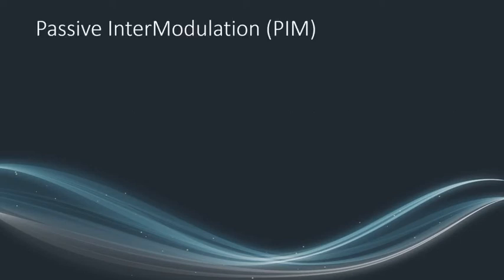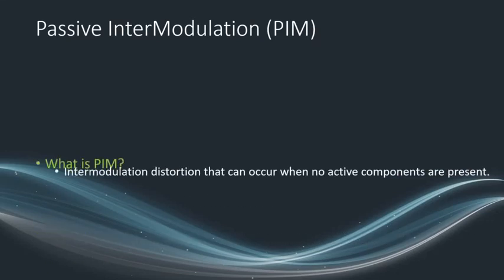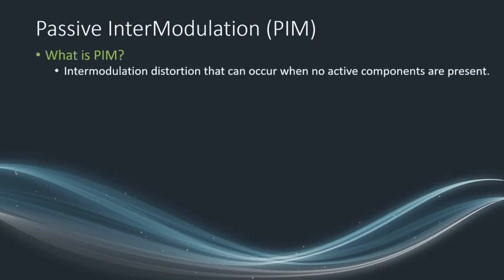Let's first talk about what is PIM. PIM is passive intermodulation. It's some kind of intermodulation distortion that can take place when no active components are present — meaning passive components. Passive components can refer to anything from splitters, connectors, switches, or even antennas.